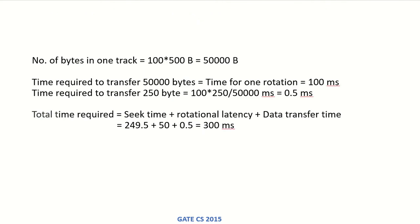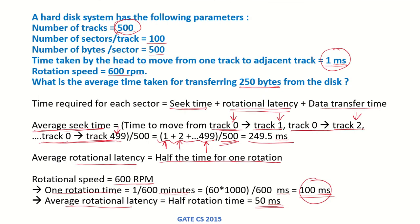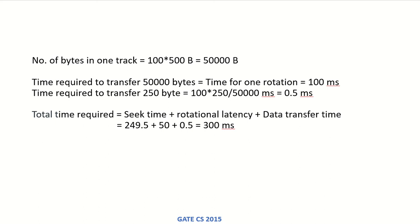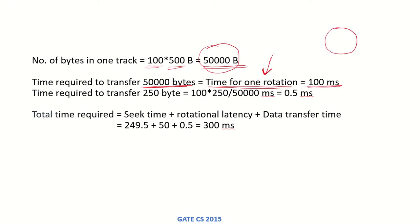The number of bytes in one track: there are 100 sectors per track and each sector has 500 bytes, giving 50,000 bytes per track. These 50,000 bytes can be transferred in the time required for one full rotation, which is 100 milliseconds, since one rotation means covering one whole track.